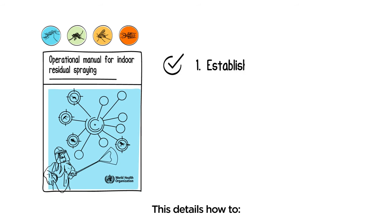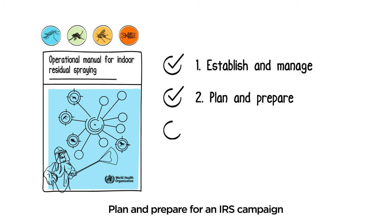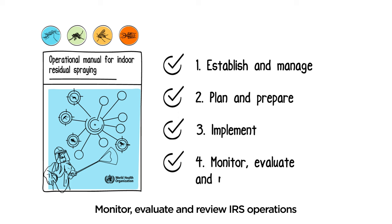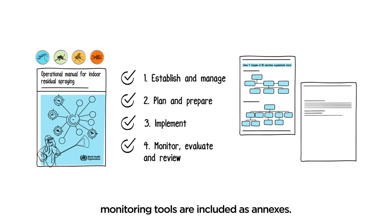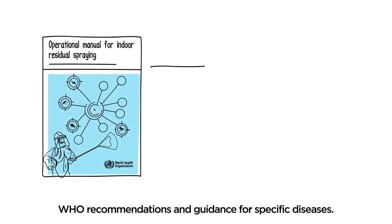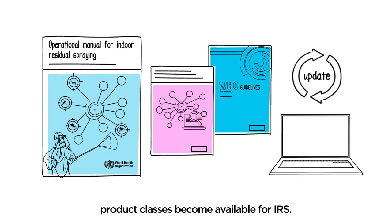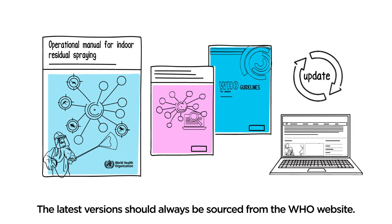The guidance details how to establish and manage an IRS program, plan and prepare for an IRS campaign, implement a campaign, and monitor, evaluate, and review IRS operations. A range of sample data forms and monitoring tools are included as annexes. This IRS operational manual is designed to complement WHO recommendations and guidance for specific diseases. These can sometimes be updated, such as when new insecticide product classes become available for IRS, and the latest versions should always be sourced from the WHO website.